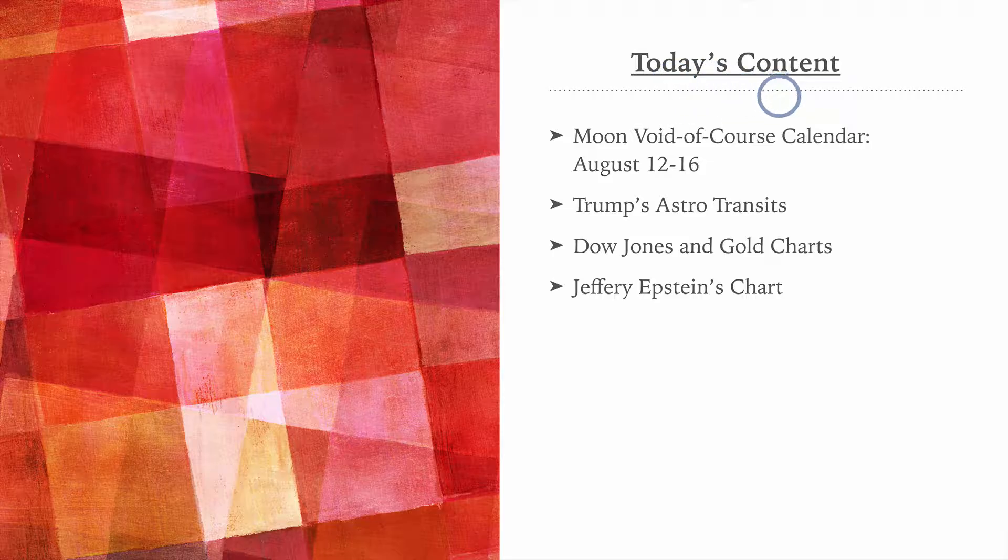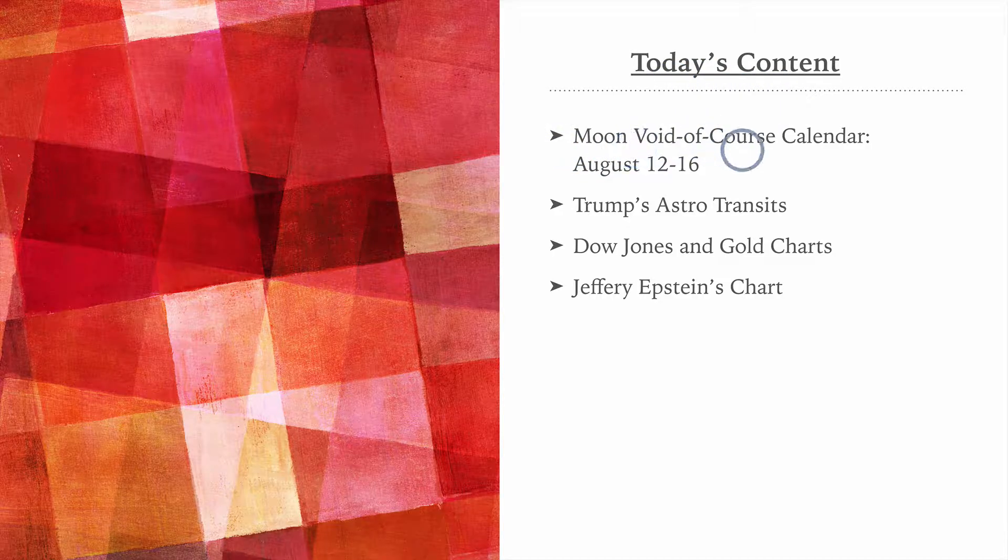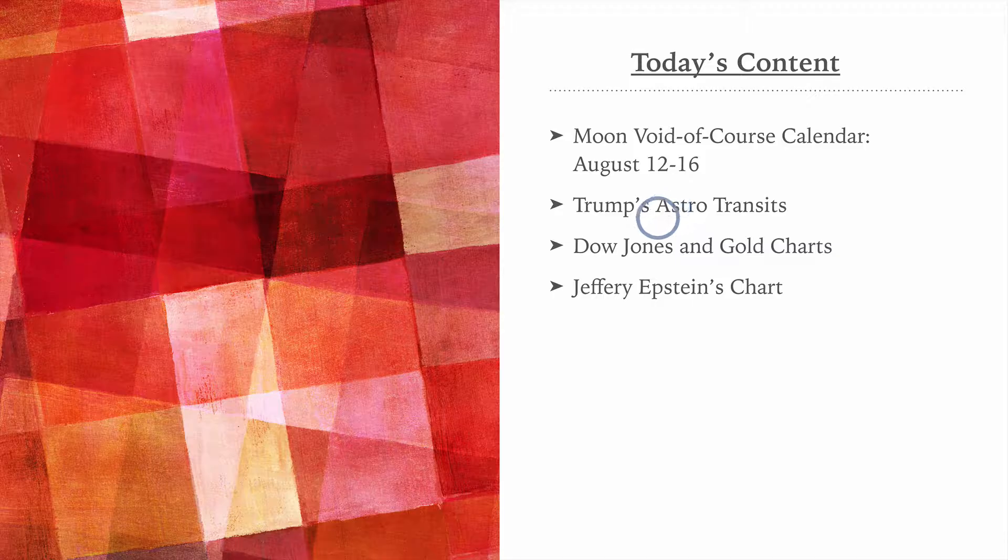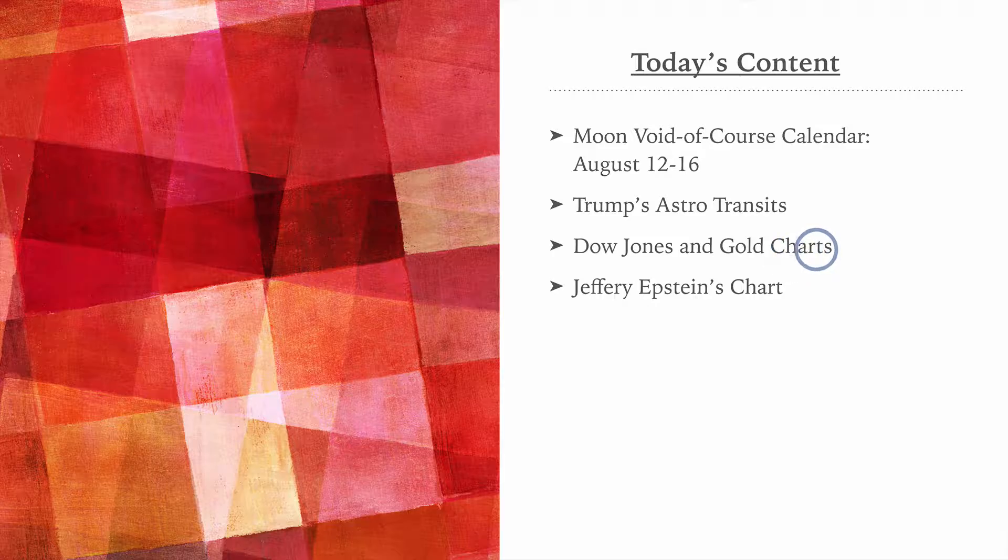So what's today's content? As usual, we'll look at the Void of Course Moon calendar for this upcoming week. There are some very short-term interesting things happening in Donald Trump's astrology, and we'll look at some markets, the Dow Jones, gold, and actually at the last minute I added Bitcoin. And finally, we'll look at Jeffrey Epstein's astrology chart.